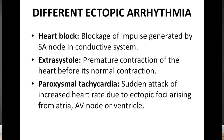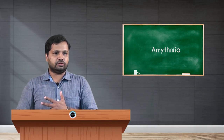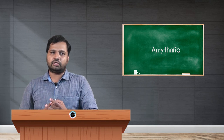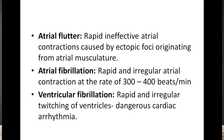The different ectopic arrhythmias include: first, heart block — blockage of the impulses generated by the SA node in the conductive system. Second, extra systole — a premature contraction of the heart before its normal contraction, causing one extra beat. Third, paroxysmal tachycardia — a sudden attack of increased heart rate due to ectopic foci arising from the atria, AV node, or ventricle, generating extra impulses causing an extra heartbeat.